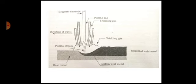Base metals welded by plasma arc welding are carbon and alloy steels, stainless steels, copper alloys, titanium alloys, aluminum alloys, nickel and cobalt alloys, etc.